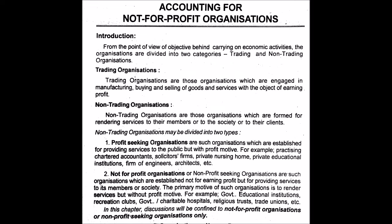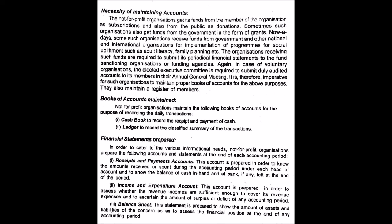In class 11, you learned to prepare the financial statements of a sole proprietorship — the trading account, the profit and loss account, and the balance sheet. Those are the final accounts of a sole proprietorship. Now, the final accounts or financial statements of a not-for-profit organization are slightly different from those of a sole proprietorship.